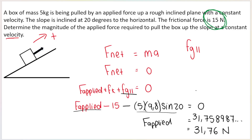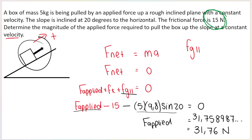Remember never to forget FG parallel and FG perpendicular — so many students forget about FG parallel when an object is on a slope and get the entire question wrong. Also note how I start with plus signs and only put the negatives in when substituting values. Let me know what other Newton's questions you want to see in the comments below, and check out the links in the description for more Newton's law videos. I hope that was helpful — subscribe for more, goodbye everybody.